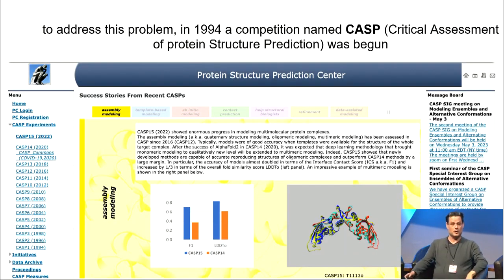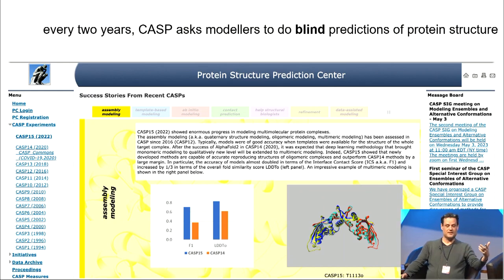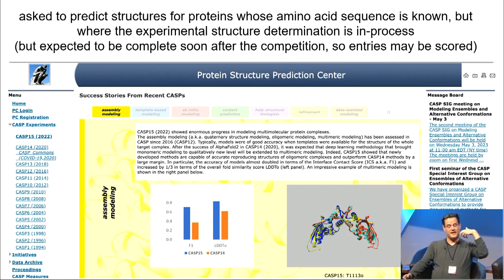To address this problem, in 1994, a competition was begun named CASP, the Critical Assessment of Protein Structure Prediction. And every two years since then, CASP has asked modelers to do blind predictions of protein structure. What I mean by that is they are asked to predict structures for proteins, whose amino acid sequence is known, but where the experimental structure determination is in process. Some other structural biologists are currently working on it. They've been sworn to secrecy, but it's expected to be complete soon after the competition, so entries can be scored.